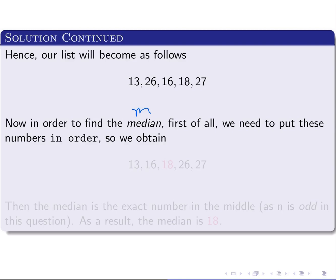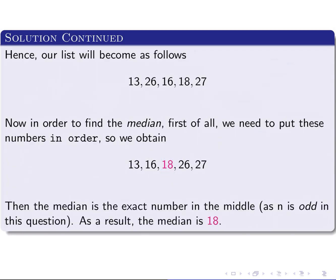it doesn't matter. So we have 13, 16, 18, 26, 27. We can eliminate from both ends, and we have one number in the middle. The number in the middle will be the median. The median is the exact number